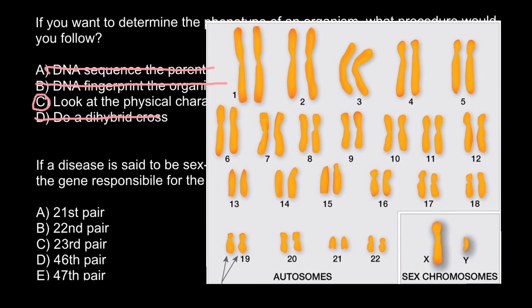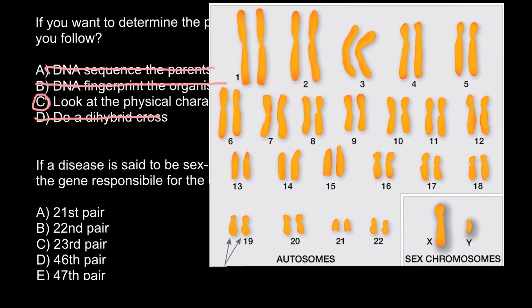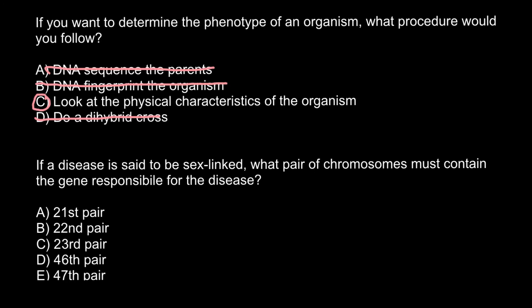So counting through the karyotype, the first 22 pairs are autosomes, and the 23rd pair is the sex chromosome pair. Therefore, our answer is Answer C — the 23rd pair.